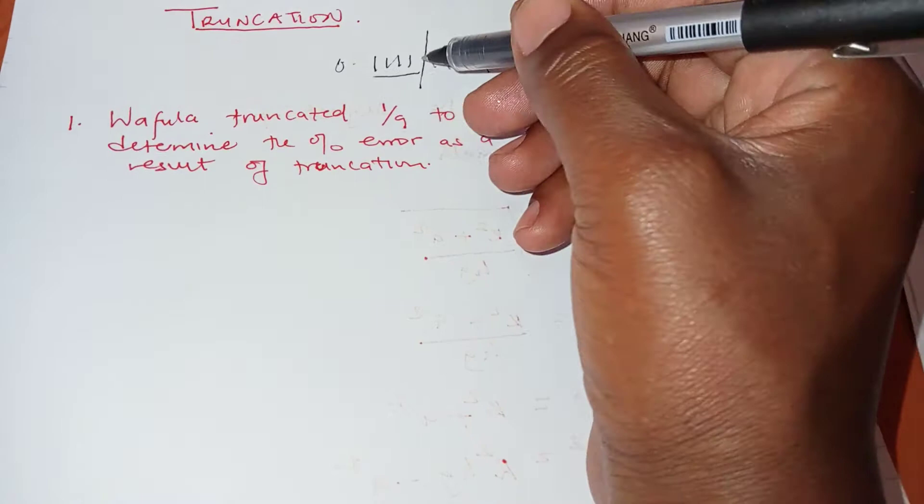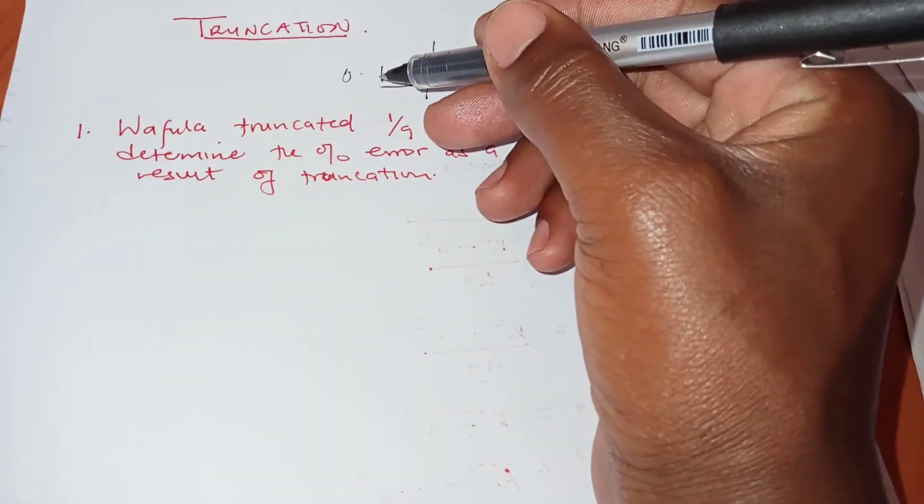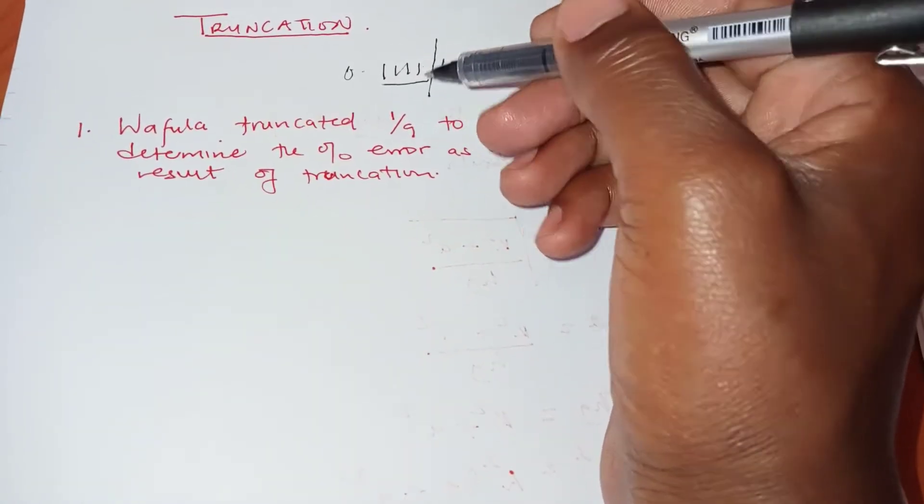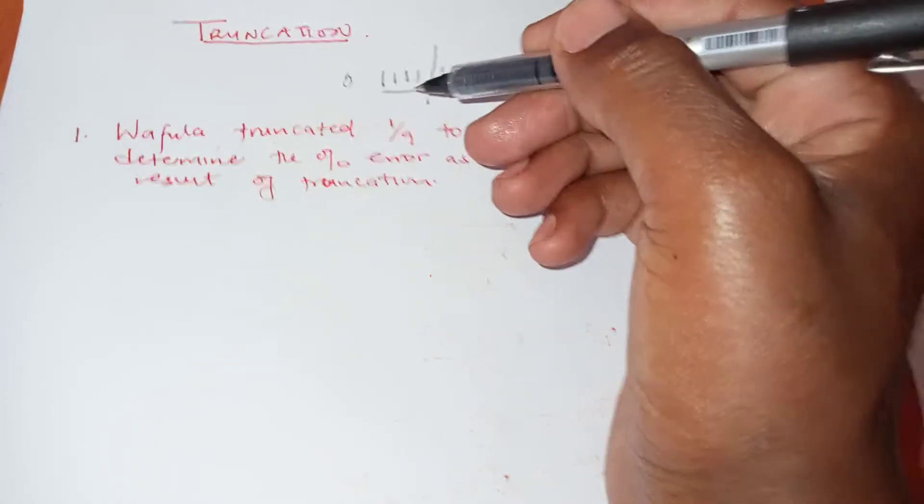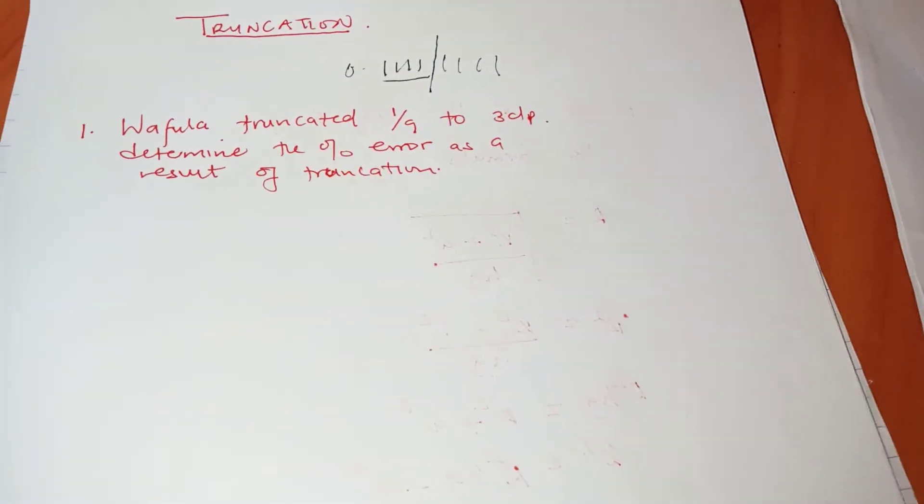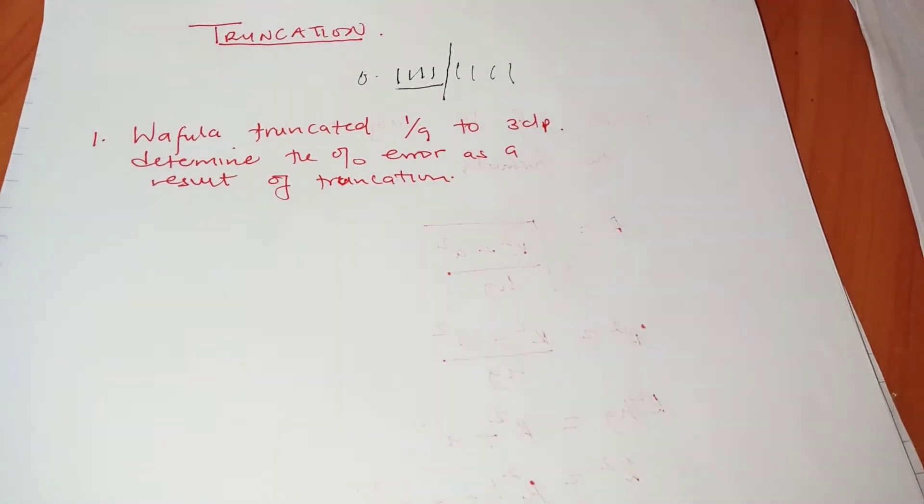So when you cut up to this point, maybe you are saying you are cutting correct to 1, 2, 3, 4 decimal places or you can say correct to 4 significant figures or some correct degree of accuracy.